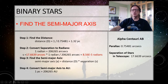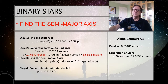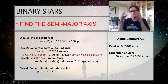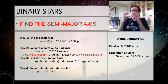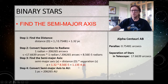Now I have the separation in radians and the distance in parsecs, so I can use the small angle formula to find the physical separation between Alpha Centauri A and B in parsecs. This should be a very small number — less than one — since they're in the same star system. Multiply: 1.32 × 8.56 × 10⁻⁵ = 1.13 × 10⁻⁴ parsecs. Punch that into your calculator and make sure you get the same thing.